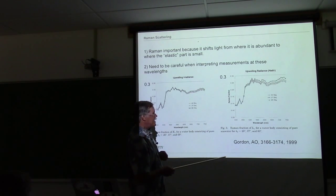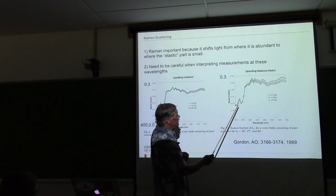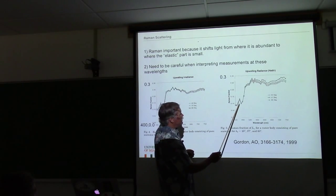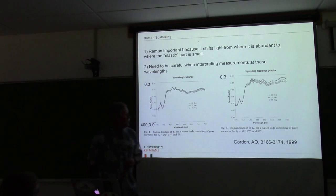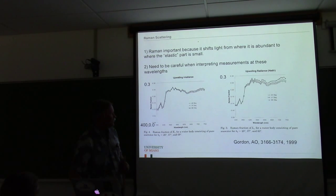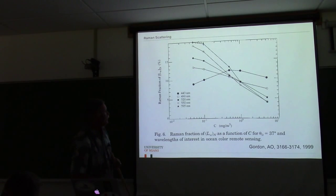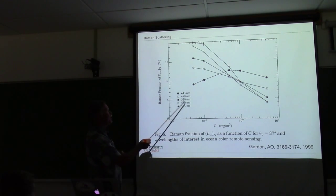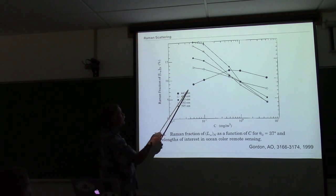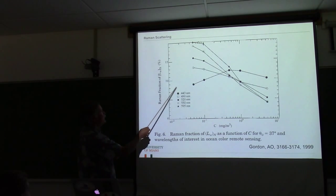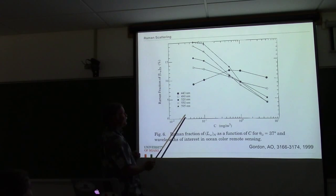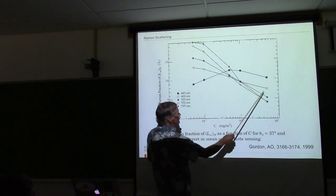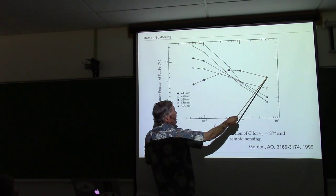Looking at the Raman fraction of upwelling radiance — it's similarly about 25% in the red wavelengths, so it's a large component of the upwelling light field in clean seawater. When we look at how Raman fraction varies with chlorophyll: at low chlorophyll, at 443 nanometers it's a small fraction but a large fraction at red wavelengths. At higher chlorophyll it inverts — becoming a larger fraction at 443 nanometers than in the red.